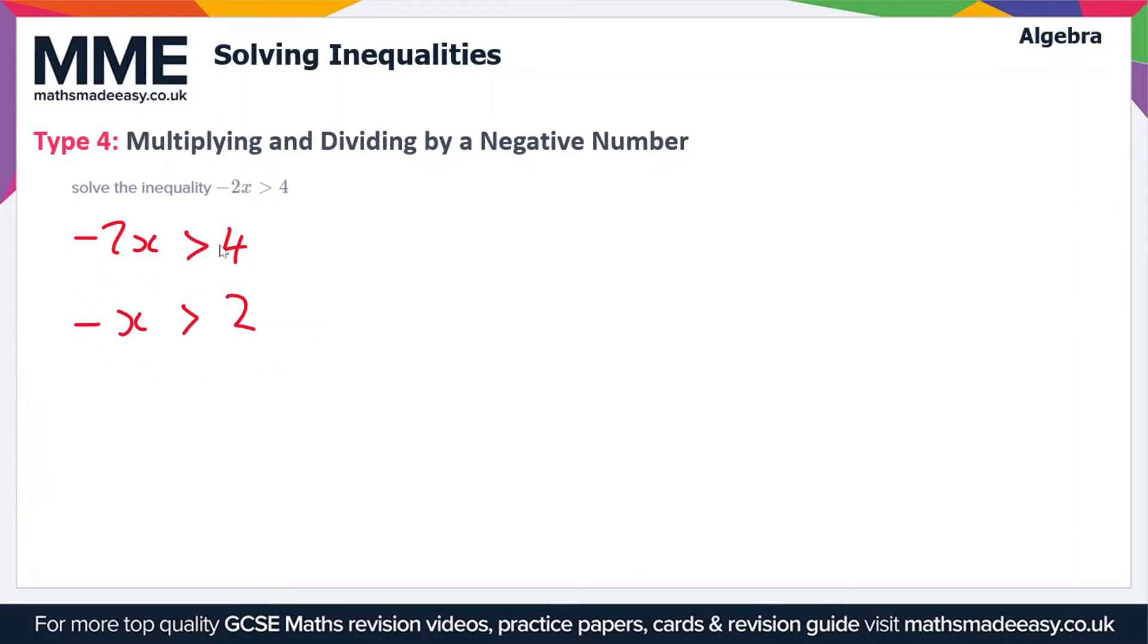So this is going to be on a number line represented like so. So we've got, let's just draw 5 points on the number line. So 0 is going to be here and 2 is going to be here. So what this means is that values beyond 2 are all the minus x values.